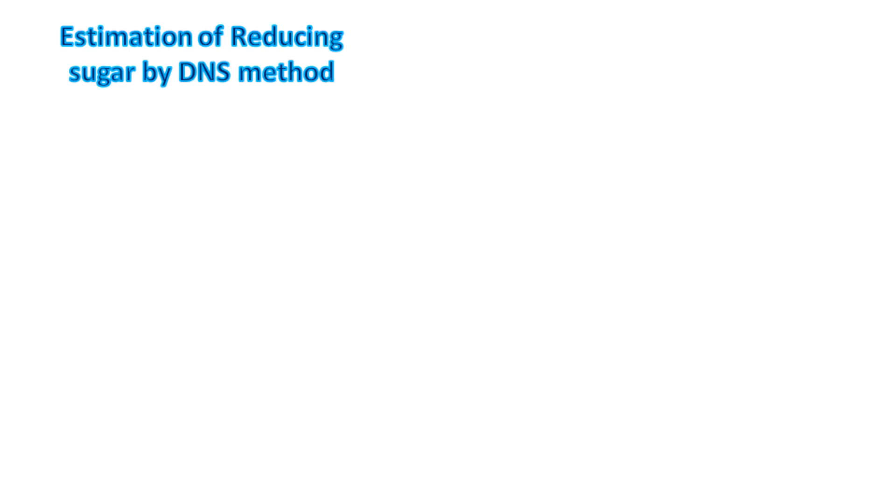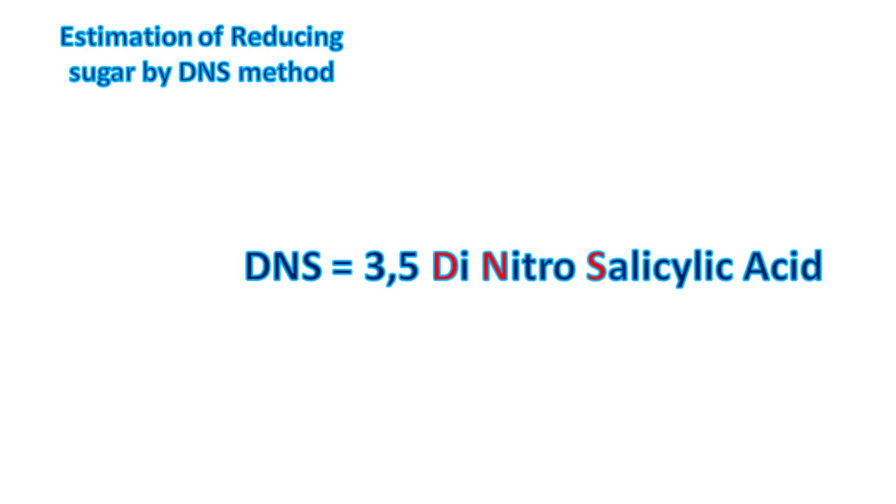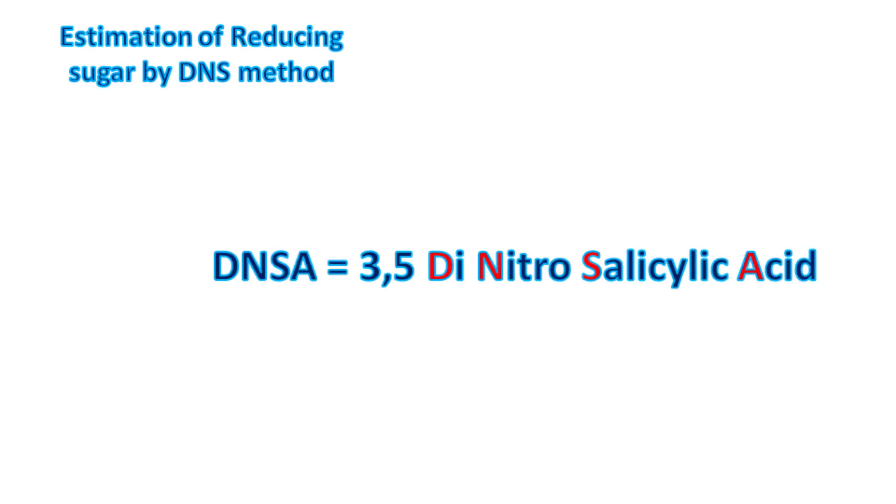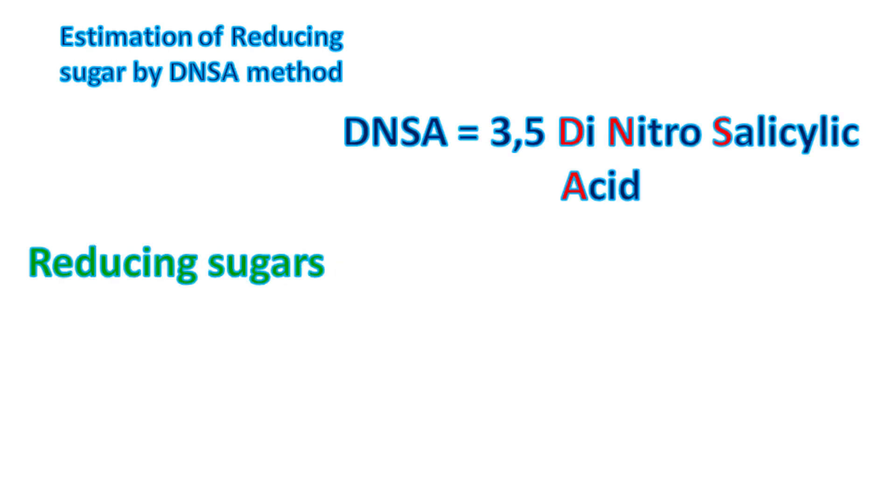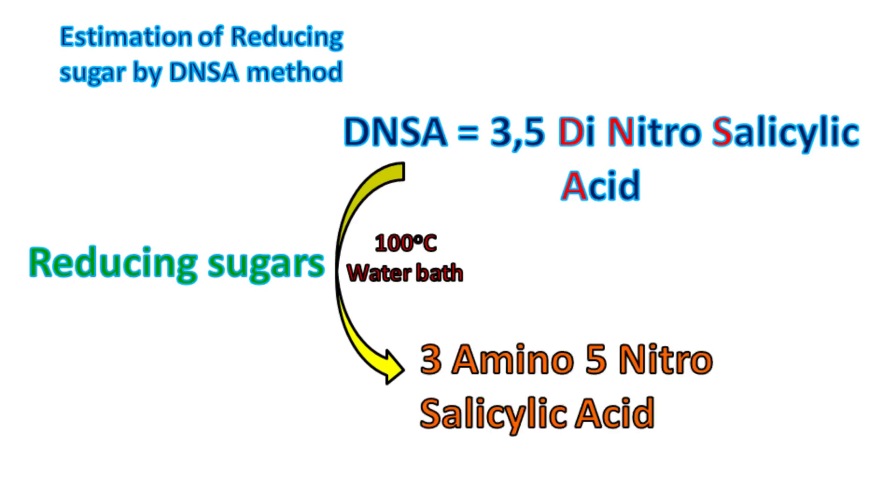Estimation of reducing sugar by DNS method. DNS stands for 3,5-dinitrosalicylic acid. Sometimes it's also abbreviated as DNSA. When reducing sugars are treated with DNSA in boiling water bath, the 3,5-dinitrosalicylic acid is converted into 3-amino-5-nitrosalicylic acid. The 3-amino-5-nitrosalicylic acid has an orange or brown color.